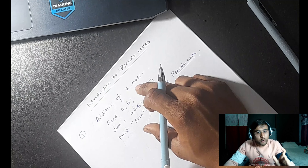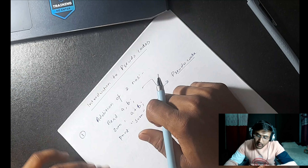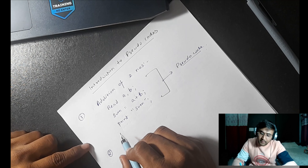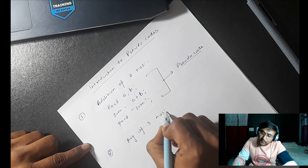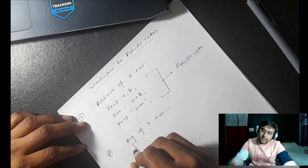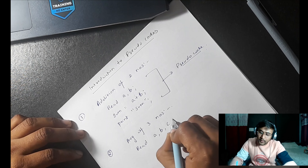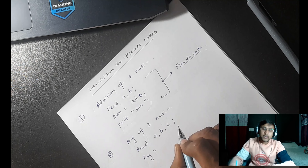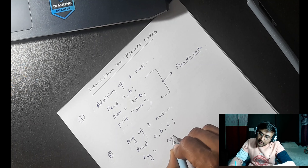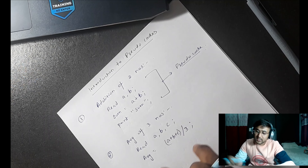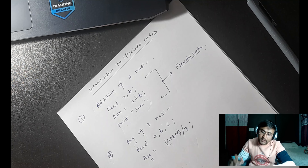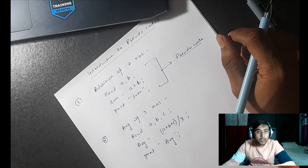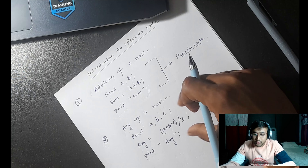This is the approach we apply while writing the actual code in the IDE. The next example is average of three numbers. For calculating the average we first read the input from the user — we take three inputs: read a, b, c. Then we create a variable named average and store the average value using the formula for three numbers. Finally, we print the average value. This piece of code is the pseudo code for calculating the average of three numbers.